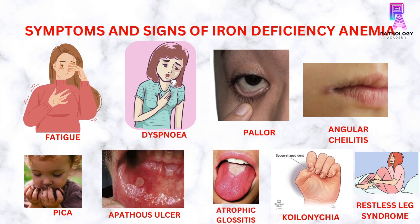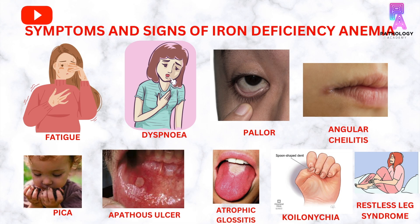The signs and symptoms of iron deficiency anemia include general symptoms of anemia, for example pallor, dyspnea, and fatigue. There are also symptoms specific to iron deficiency anemia, which are atrophic glossitis, angular cheilitis, pica, koilonychia, aphthous ulcers in the mouth, and restless leg syndrome.